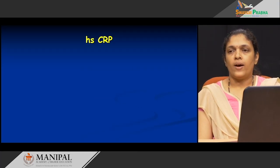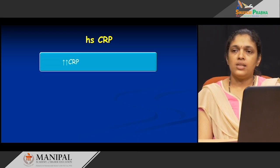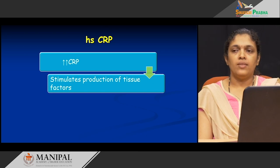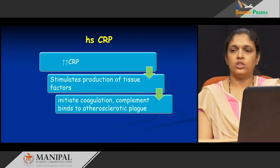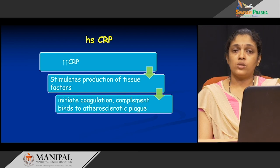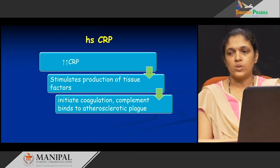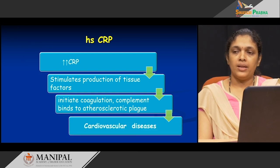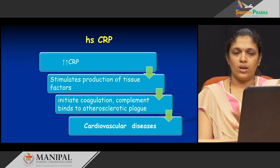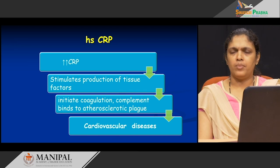Moving on to the next marker: high sensitivity C-reactive protein (HSCRP). Whenever there are high levels of CRP or HSCRP, this stimulates the production of tissue factors. Once that factor is stimulated, it initiates the production of coagulants and the process of coagulation. There is also complement production. All of these things bind to the atherosclerotic plaque, thereby increasing the size of the clot that is formed, leading to cardiovascular disease.